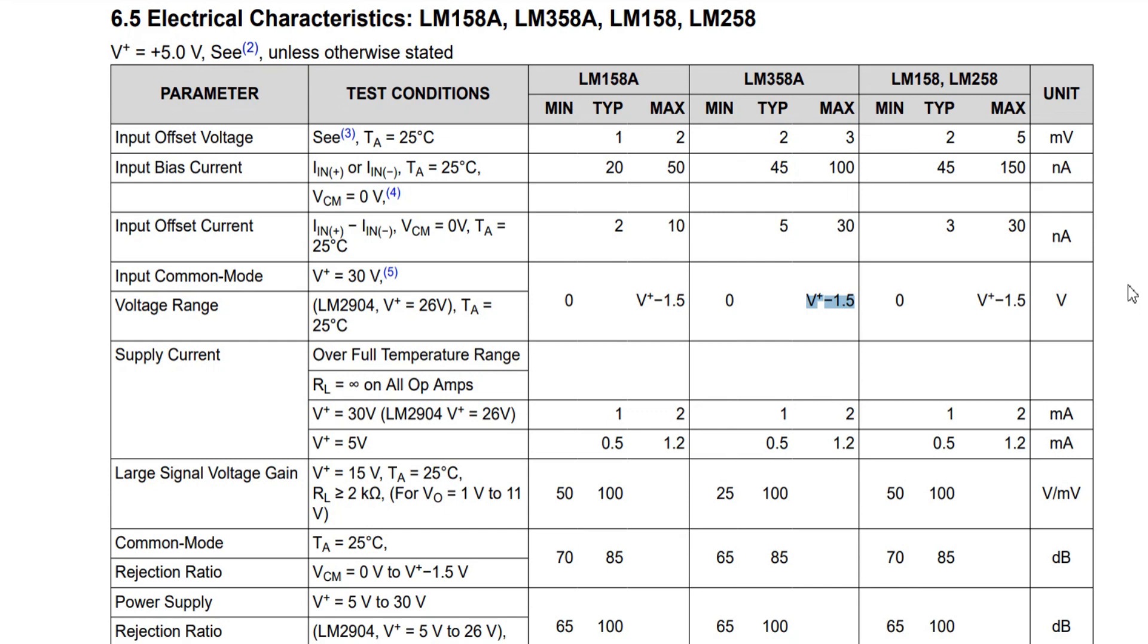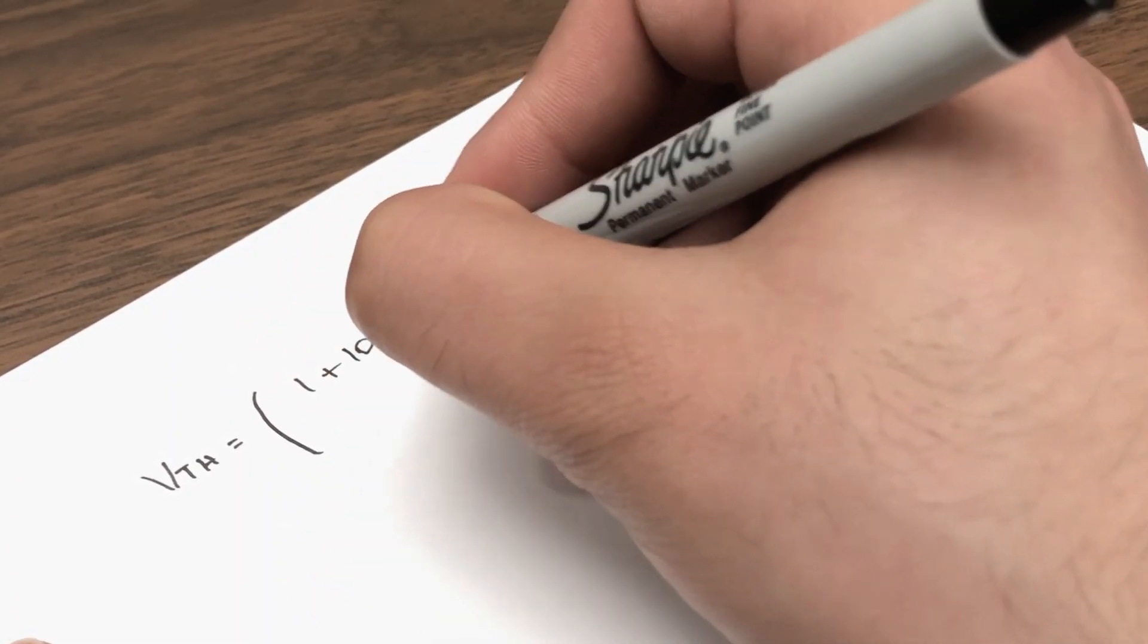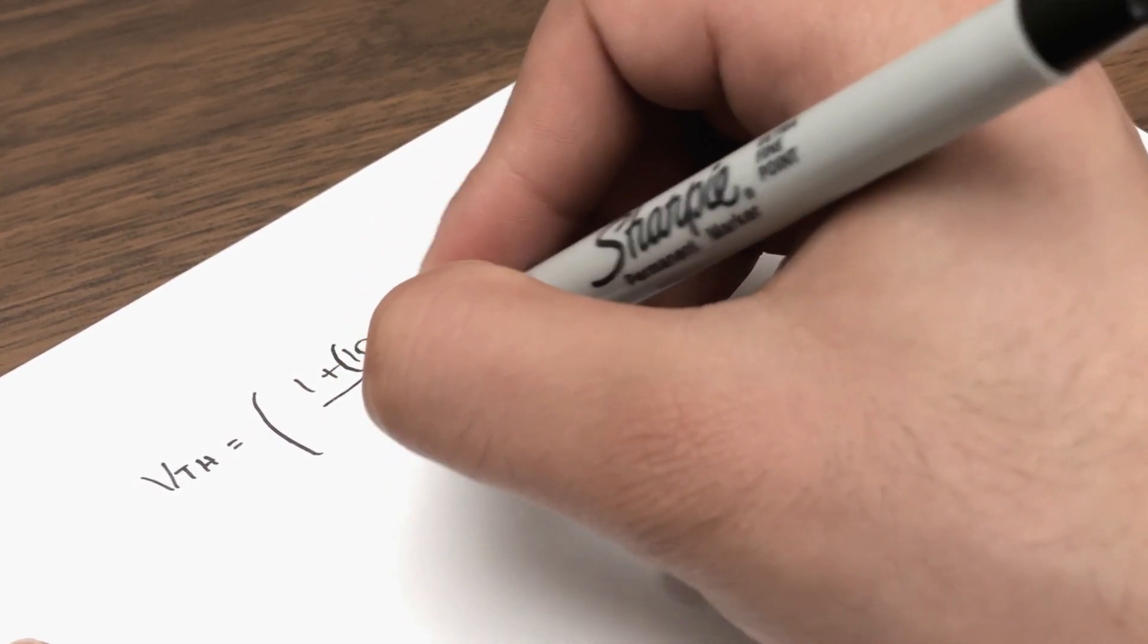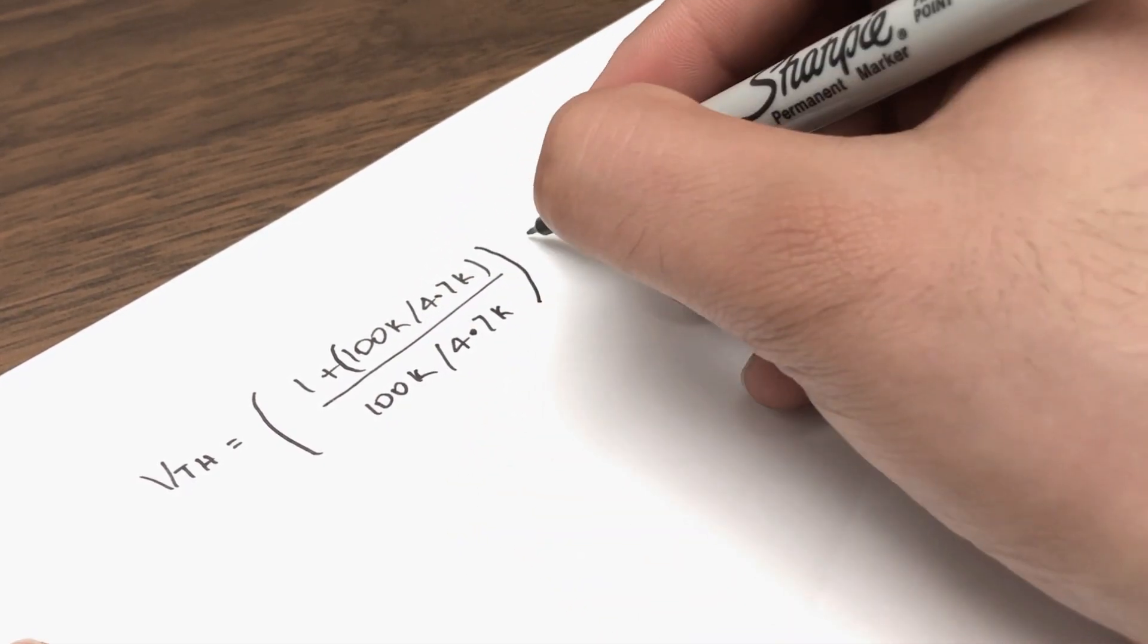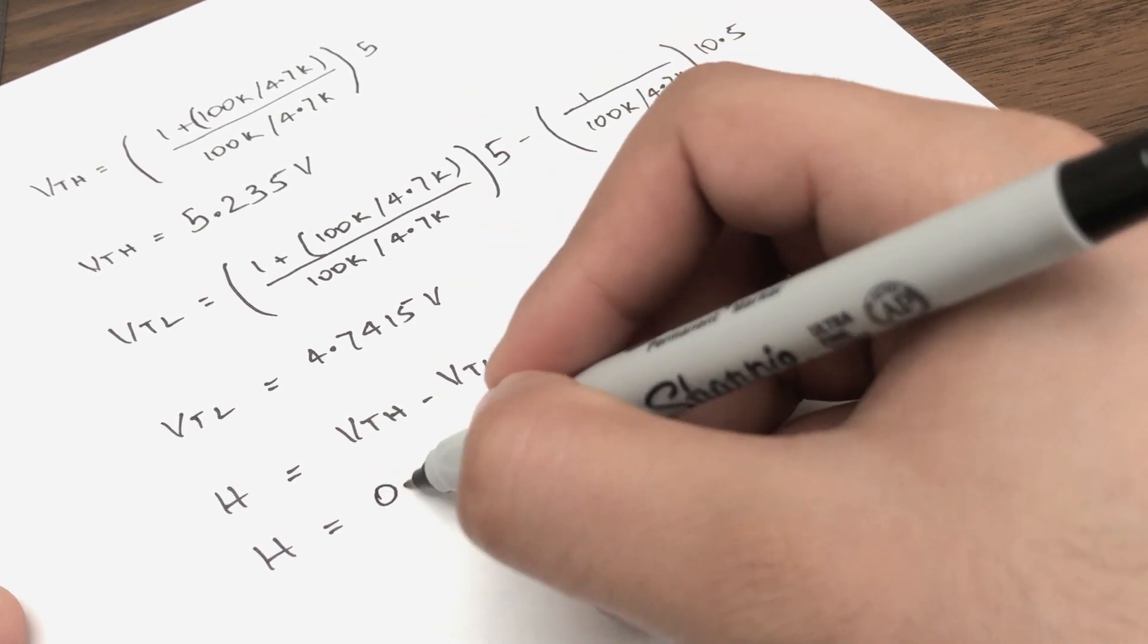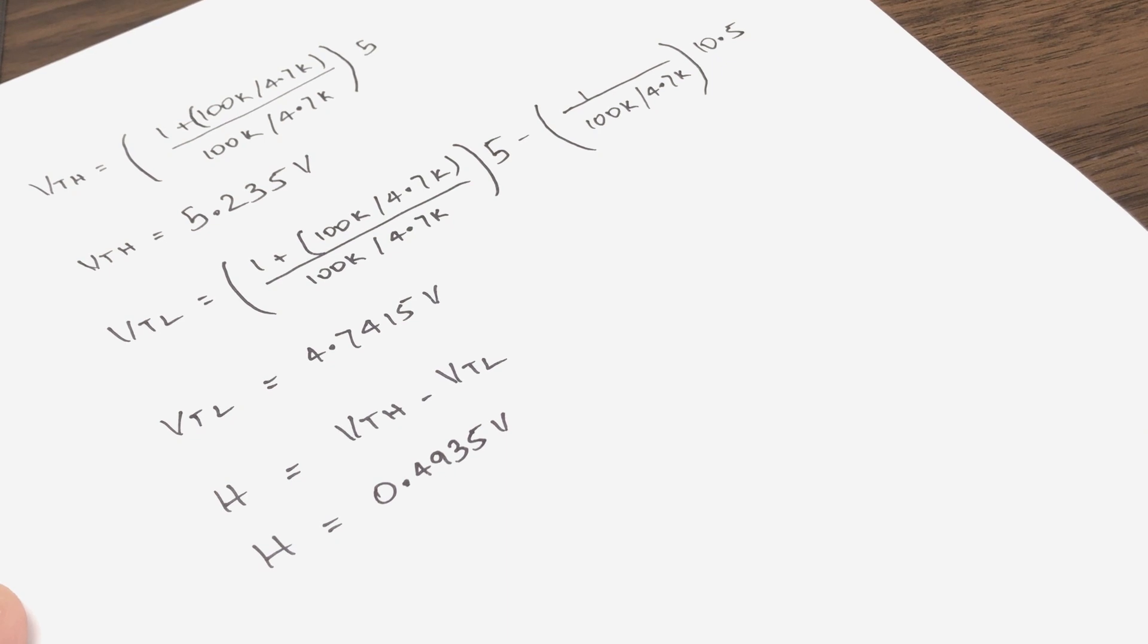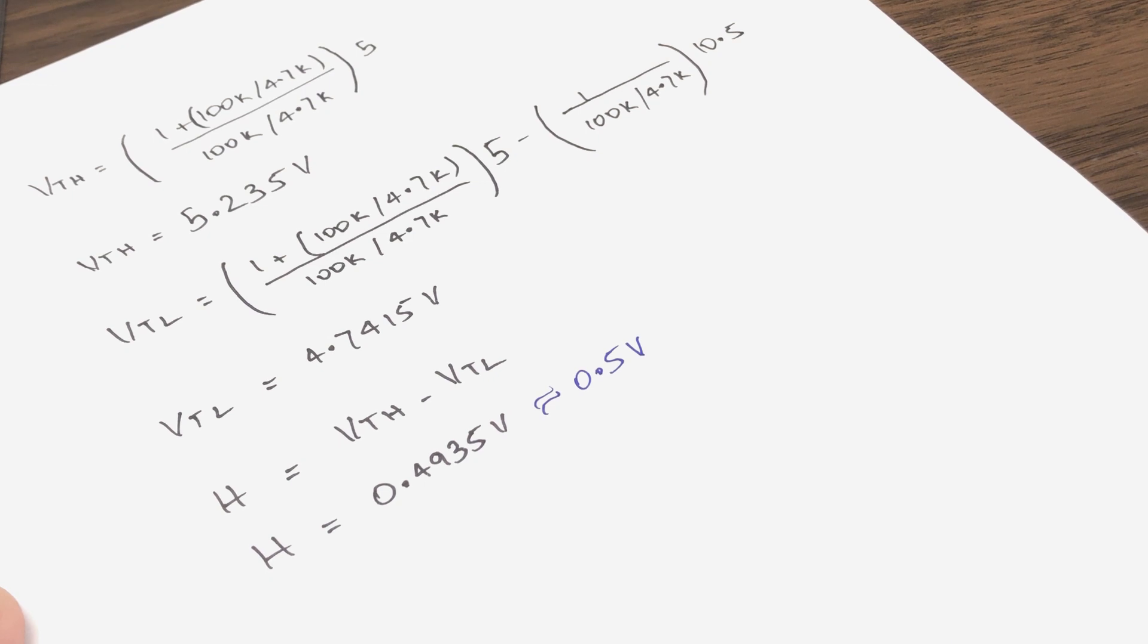The goal here is to set the hysteresis to around 0.5 volts. So, I chose a value for RF as 100K and Rin as 4.7K. Make sure to choose very high value of resistors, at least in kilo-ohms, to minimize the loading effect. The answer I got by solving these two equations and subtracting the upper threshold and the lower threshold is around 0.4935 volts, which is really close to our target hysteresis of 0.5 volts.